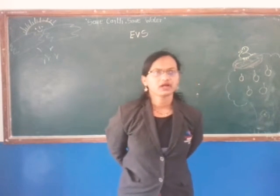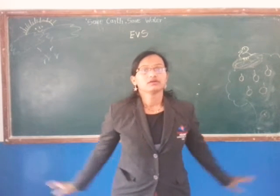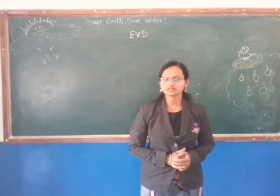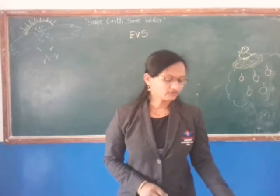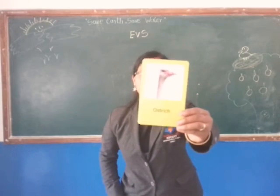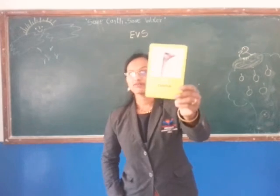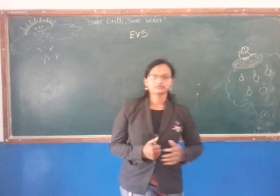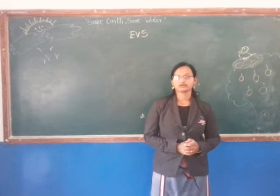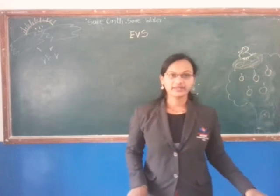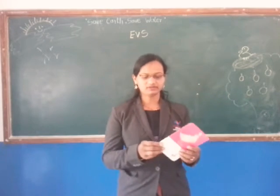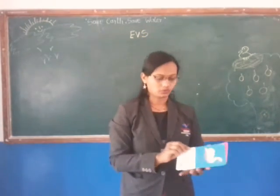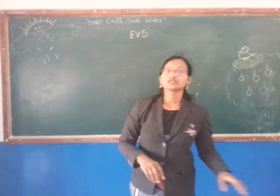Now, the few birds are not flying high — no flying high. And the few birds are swimming in water. For example, duck and swan. These birds are swimming in water.